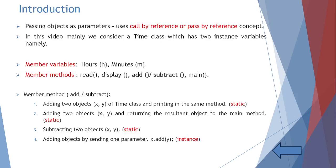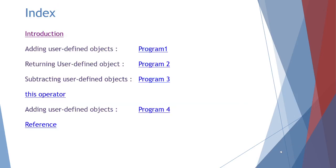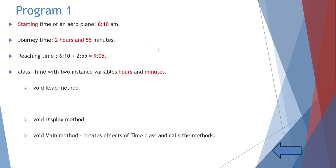Let's see Program 1 — adding user-defined objects. Consider a scenario where the starting time of an aeroplane is 6:10 AM and the journey time is 2 hours 55 minutes. We need to find the reaching time: 6:10 plus 2:55 equals 9:05.